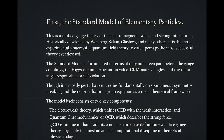The standard model is formulated in terms of only 19 parameters: the gauge couplings, the Higgs vacuum expectation value, CKM matrix angles, and the theta angle responsible for CP violation. Though it is mostly perturbative, it relies fundamentally on spontaneous symmetry breaking and the renormalization group equation as a meta-theoretical framework. The model consists of two key components: the electroweak theory, which unifies QED with the weak interaction, and quantum chromodynamics, or QCD, which describes the strong force. QCD is unique in that it admits a non-perturbative definition via lattice gauge theory, arguably the most advanced computational discipline in theoretical physics today.